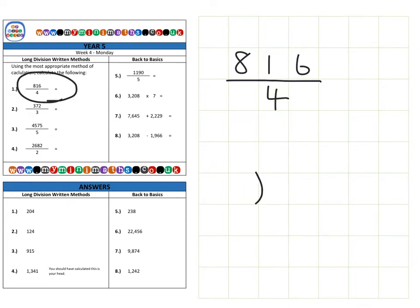So let's have a little look at our short method here. Some of you call this the bus stop method - doesn't matter what you call it, whatever you feel comfortable with. Let's write our 816 and we're going to divide that by four. So first of all, how many fours fit into eight? That's going to be two. How many fours fit into the one here? Well we can't fit any, it's too small.